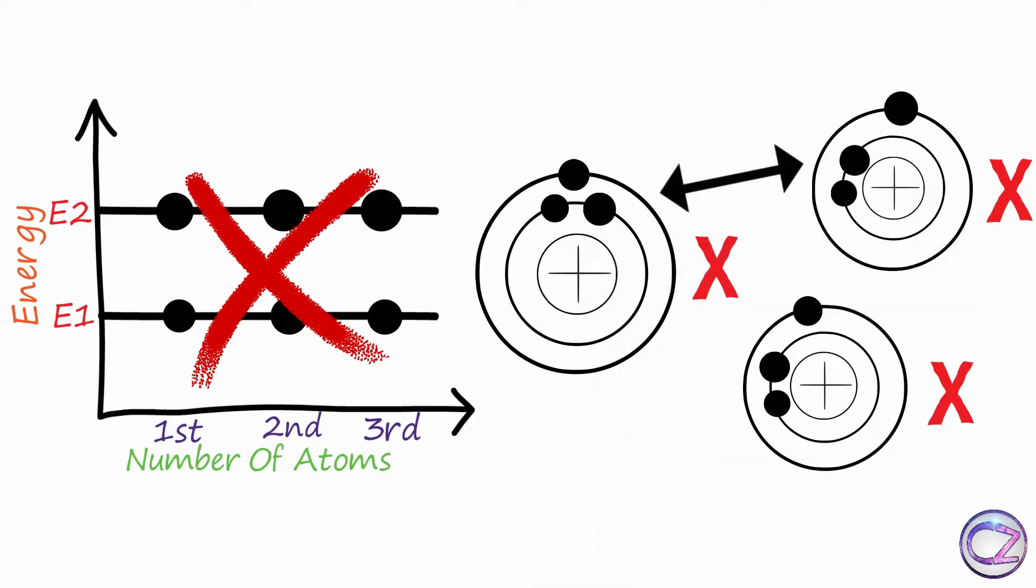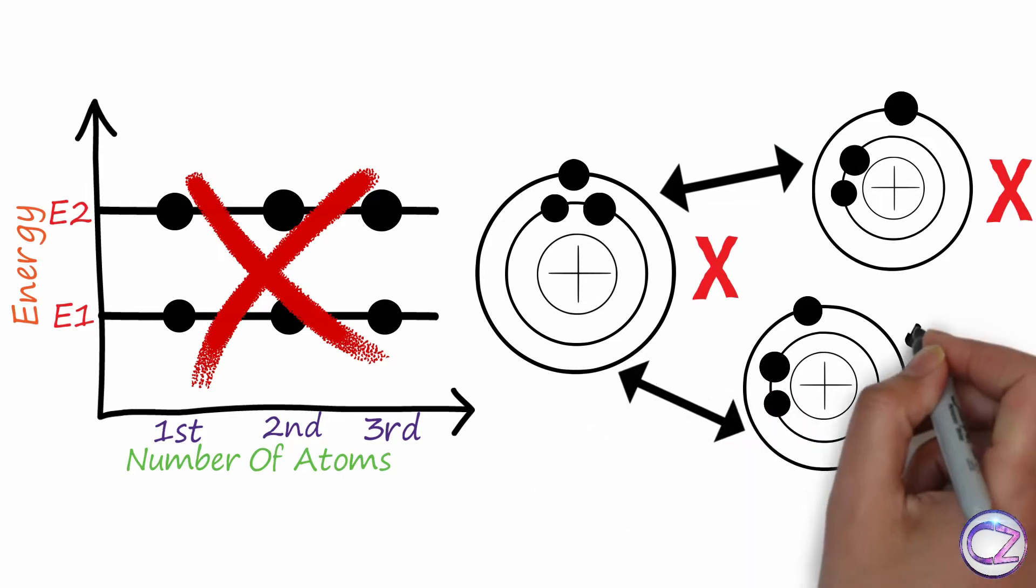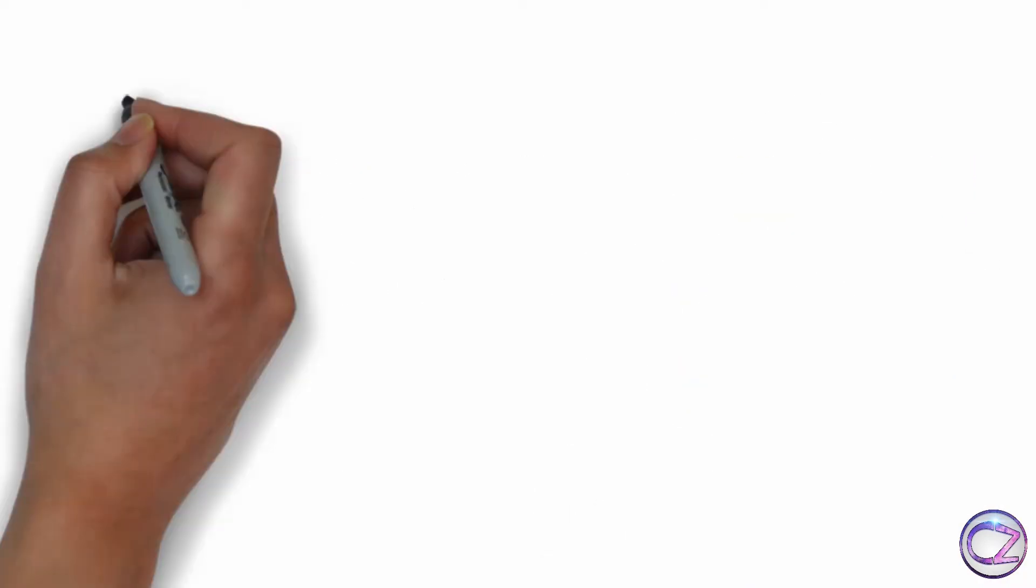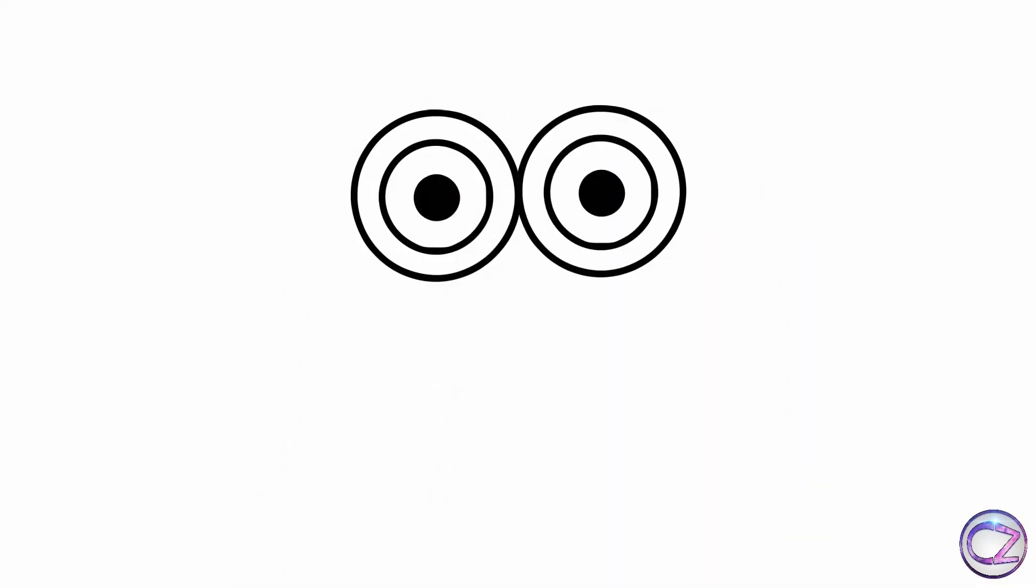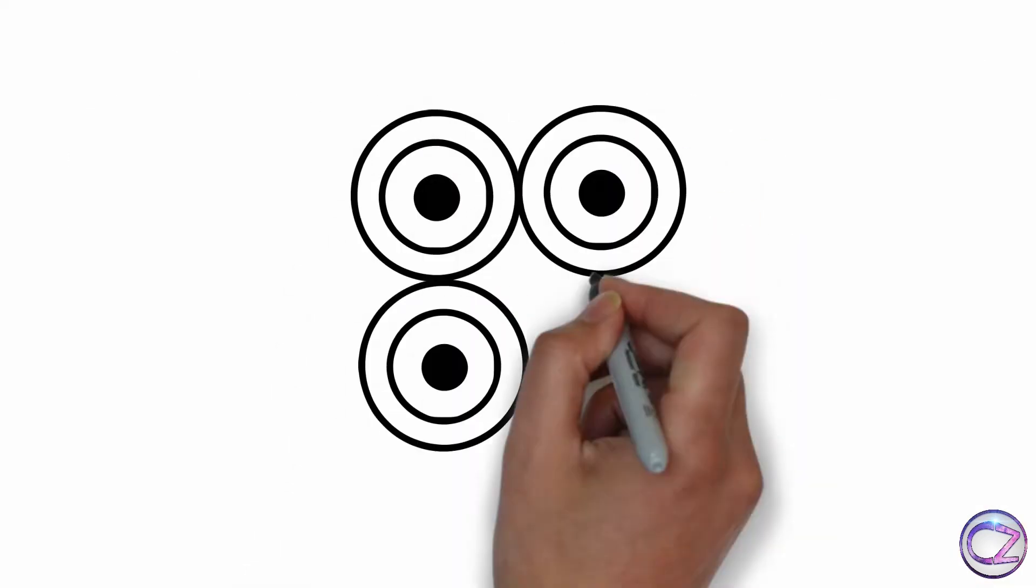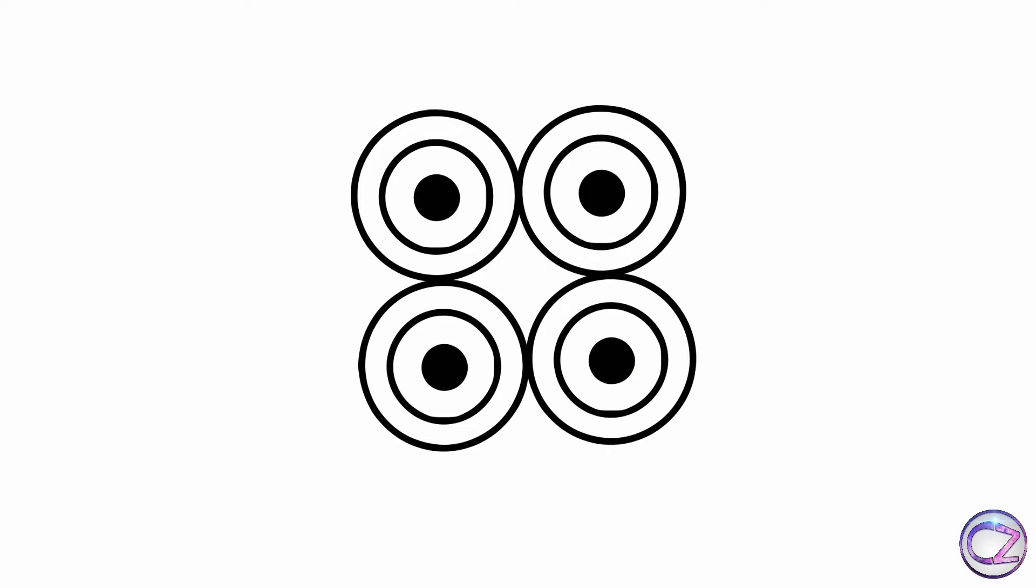It's also a straight line, but these lines are not the band. Now the question is what is a band actually? See here I have kept the atom away from another one. But we know a solid is made by billions, trillions, or more atoms.